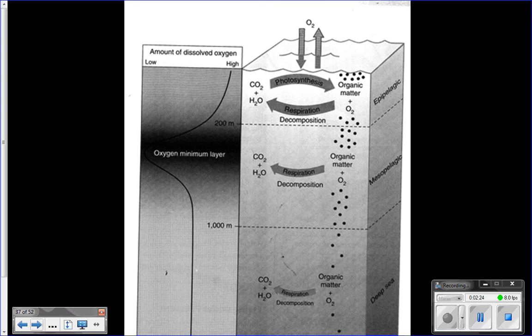As you go down into the mesopelagic, these little black dots here on the right are representing the organic matter, like the food. You do have respiration and decomposition going on—there's enough food to support lots of animals, so you do still have cellular respiration and decomposition going on at a larger degree than at the surface. But notice what you don't have: you don't have a way for oxygen to get back into the water.